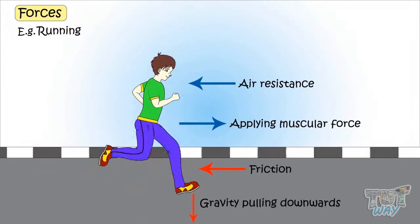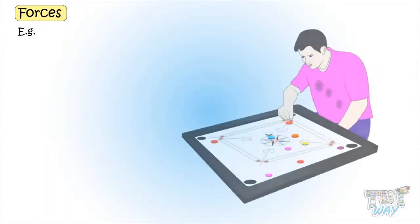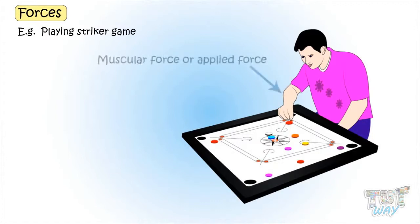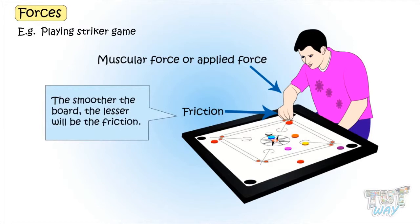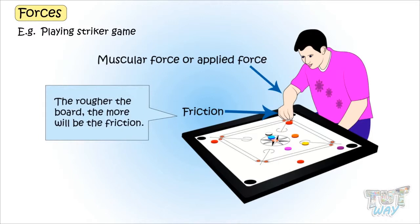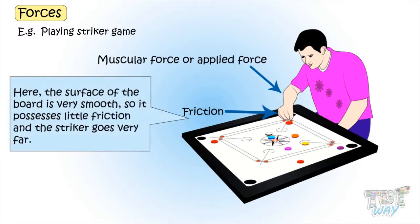Now let's see the forces acting while we are playing a striker game. We apply muscular force, or applied force, to move the striker ahead. Friction is always there when two objects are in contact, and here the striker and the board are in contact. The smoother the board, the lesser will be the friction, and the rougher the board, the more will be the friction. Here the surface of the board is very smooth, so it has little friction, and the striker goes very far.